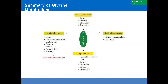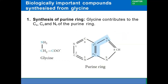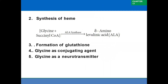Biologically important compounds synthesized from glycine: first, purines — glycine contributes to C4, C5, and N7 of the purine ring structure. Second, synthesis of heme — glycine and succinyl-CoA serve as precursor molecules for synthesis of heme and other porphyrins. Glycine combined with succinyl-CoA produces delta-aminolevulinic acid (ALA), catalyzed by ALA synthase.